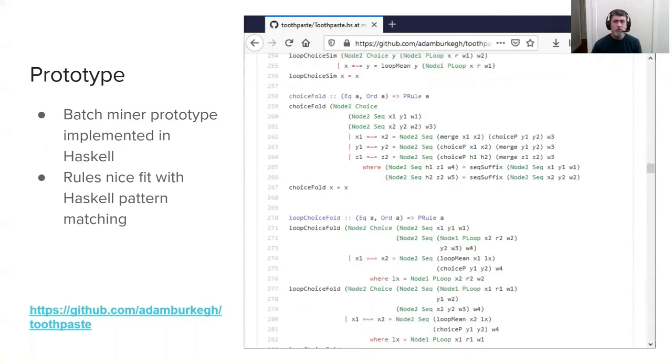A prototype has been developed in Haskell. The rules, the use of rules, and the relatively mathematical formalization was quite a good fit for Haskell pattern matching. This is open source—it's on GitHub. The URL is there and also in the paper.